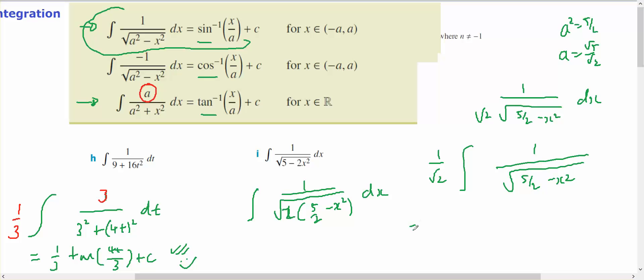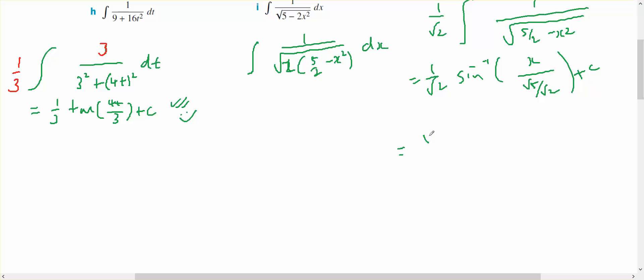So this is going to equal 1 on root 2 inverse sign, x is x on top of root 5 on root 2 plus some constant c, which is going to equal root 2 on 2 inverse sign of root 2x on root 5 plus some constant c.